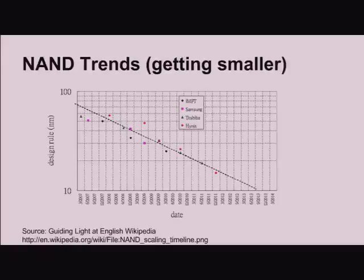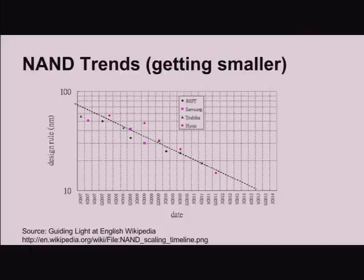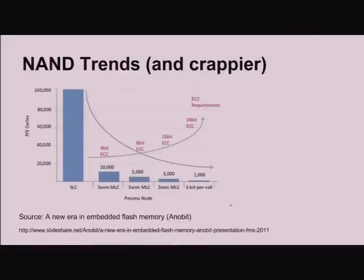This is a graph I found on Wikipedia that talks about the trends in NAND since 2007 to 2013. Most of the process nodes were in the 50–60 nanometer range earlier and are in the 10 nanometer range now. It's not really important to know the exact sizes, but it is important to know that it's small and getting smaller. And as it's getting smaller, it's getting crappier.